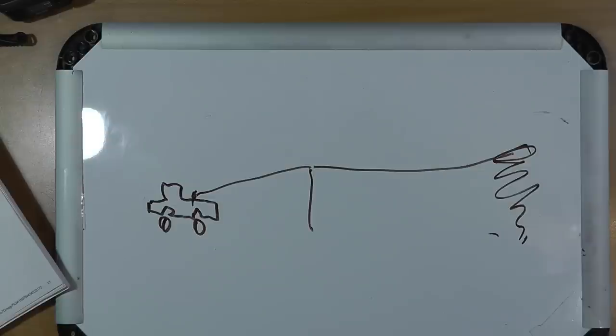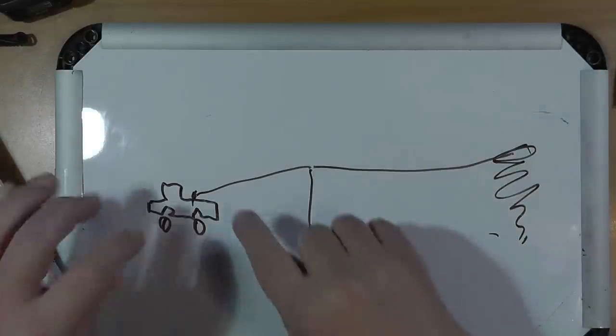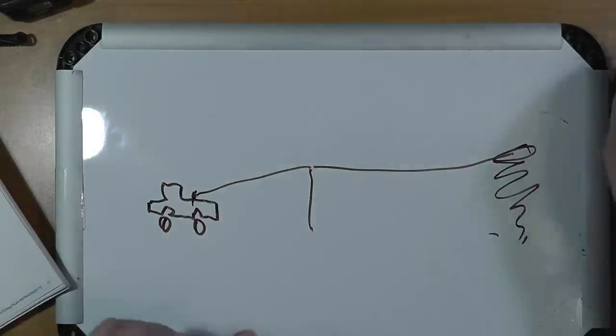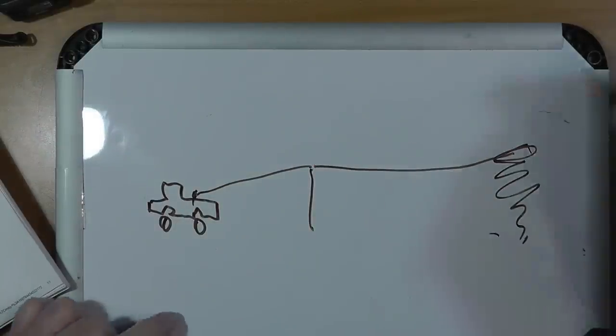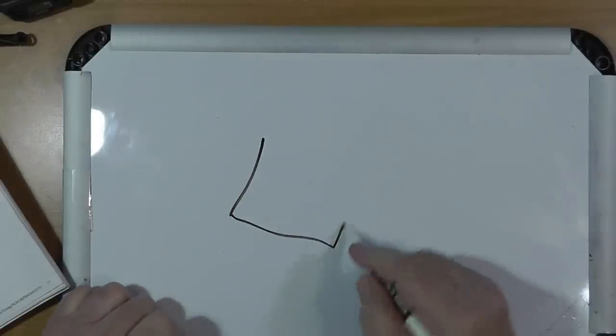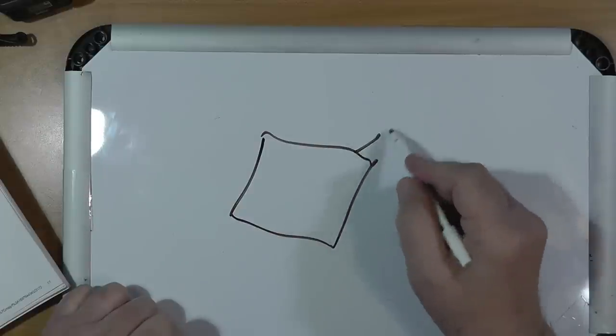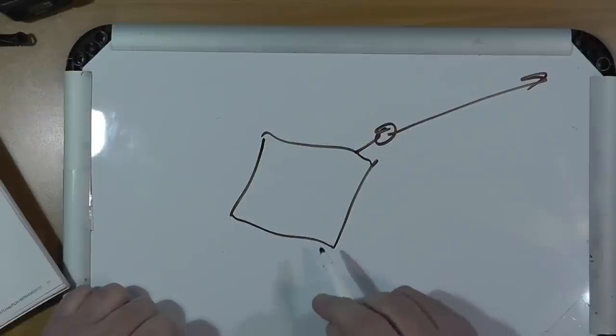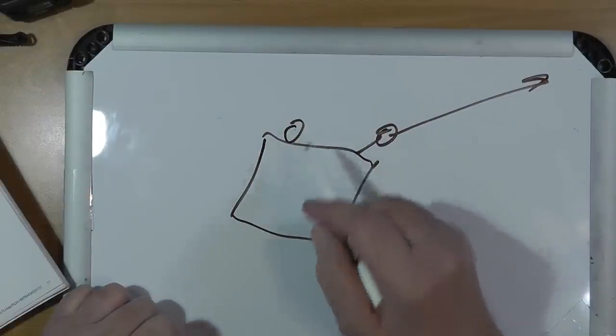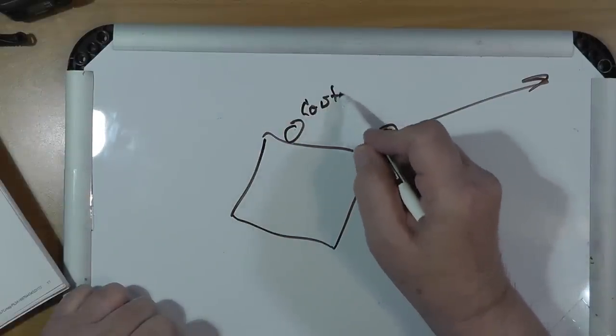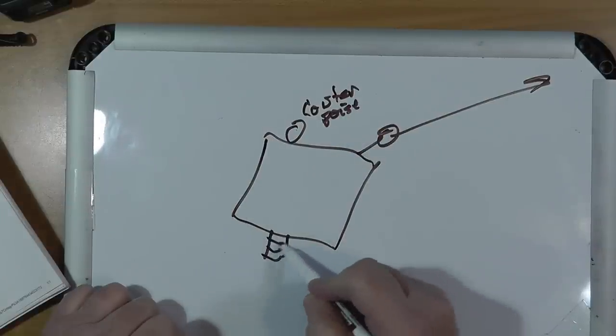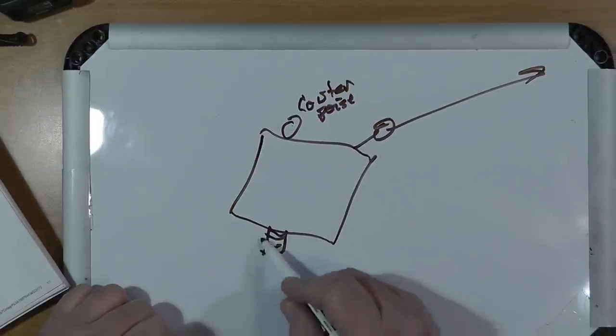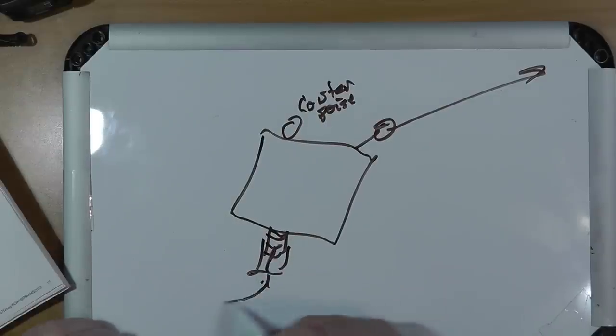Now, on the balun that is right here, there are two elements. The balun has a feed point. It has a connector here for the antenna. It has another connector over here for counterpoise. And then it has an SO239 that you put a PL259 on and go to your radio.